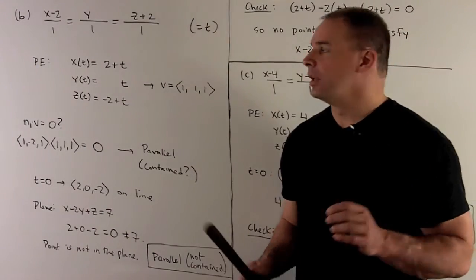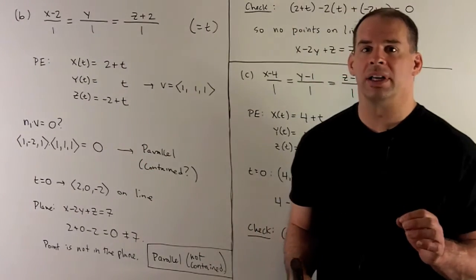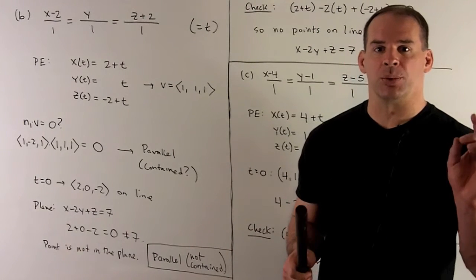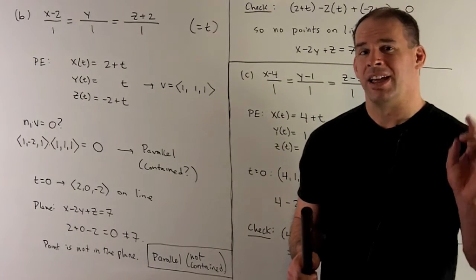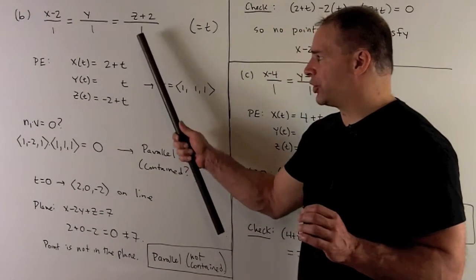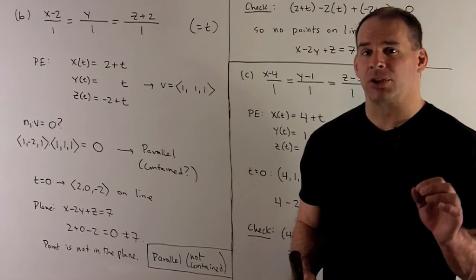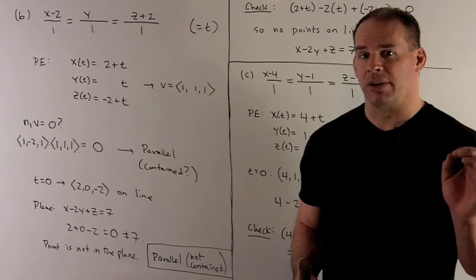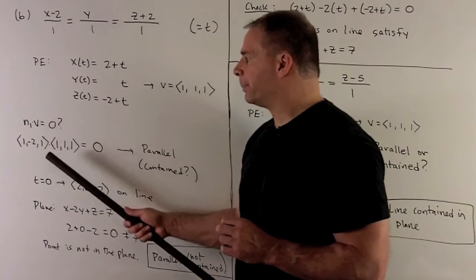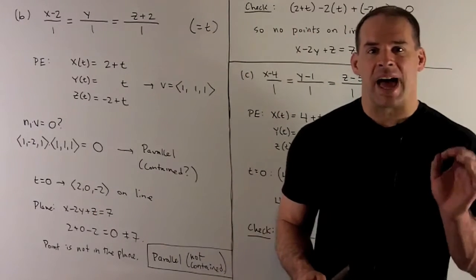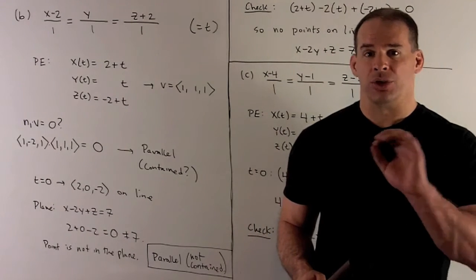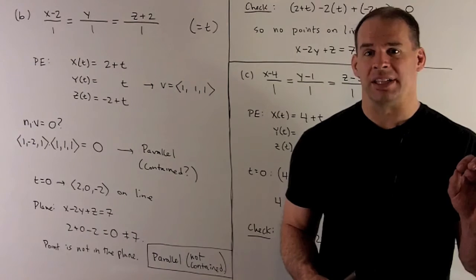For our next line, we have (x minus 2) over 1 equals y over 1 equals (z plus 2) over 1. Setting each term equal to t and isolating x, y, and z gives our parametric equations. Peeling the coefficient off each t gives the direction vector v equals (1, 1, 1). Taking the dot product of n1 with v gives 0, which means our line is parallel to our plane.